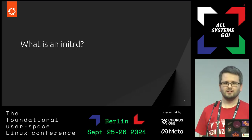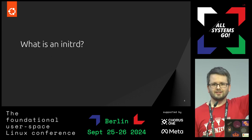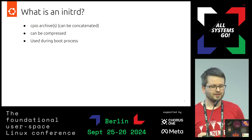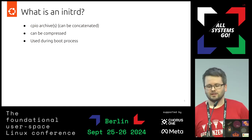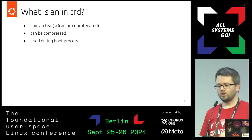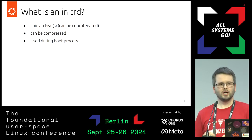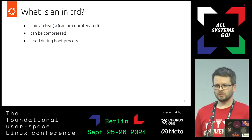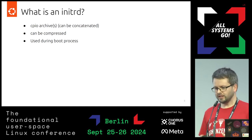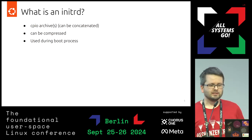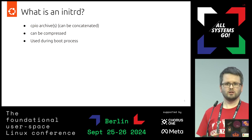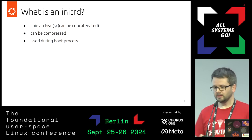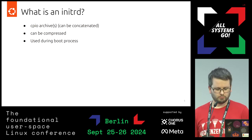What is an initrd? An initrd is a CPIO archive, or it could be multiple CPIO archives concatenated together. CPIO archives are similar to tarballs — they just contain some files — and these CPIO archives could be compressed using different compression algorithms depending on what the kernel supports.